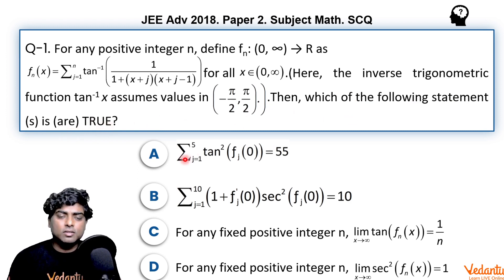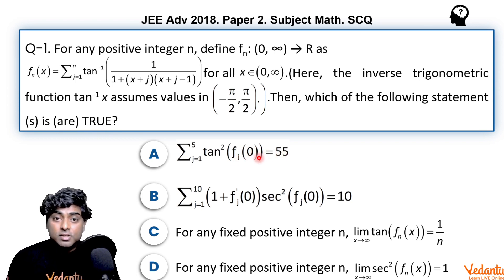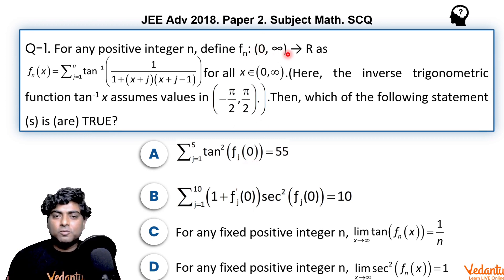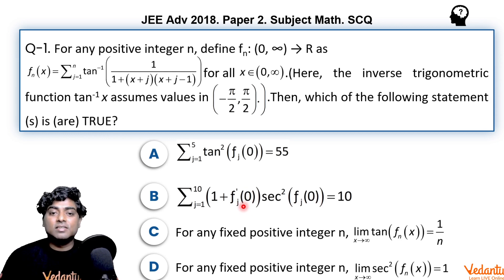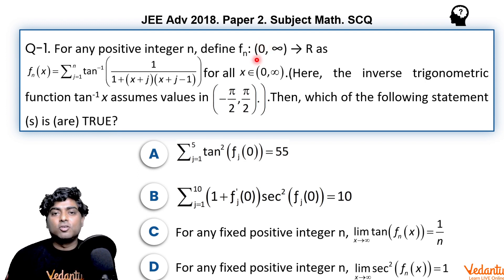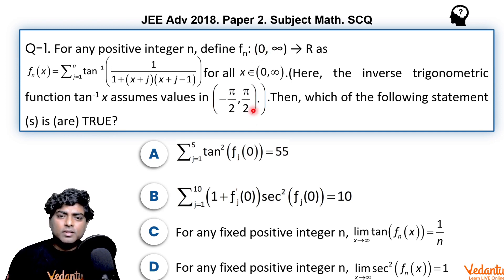Then which of the following statements are true — one or more options can be correct. Option A: Σ (j=1 to 5) tan²(fj(0)) = 55. Look at the option carefully — the domain does not contain 0; it is open at 0. They are asking about f(0), and in option B also they ask about fj(0) and f'j(0). These might have been true if 0 were included in the domain.